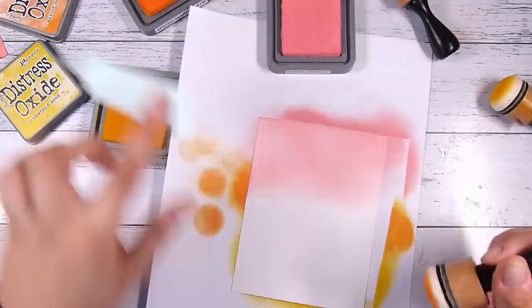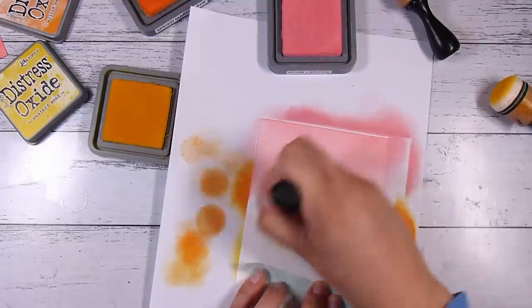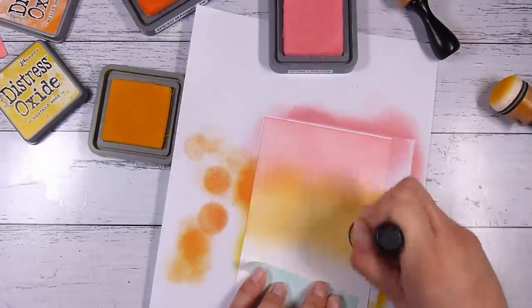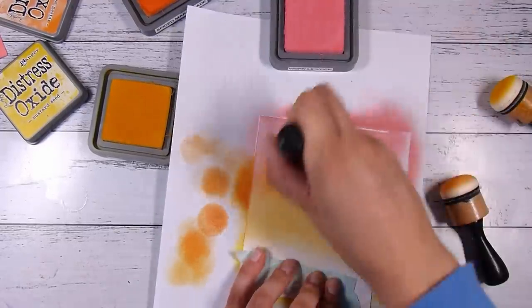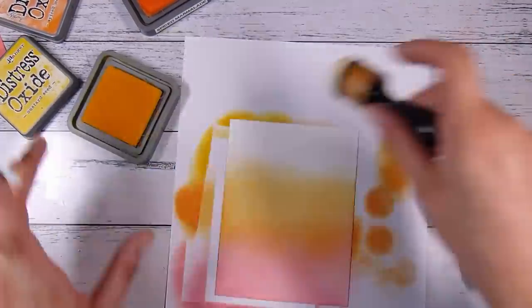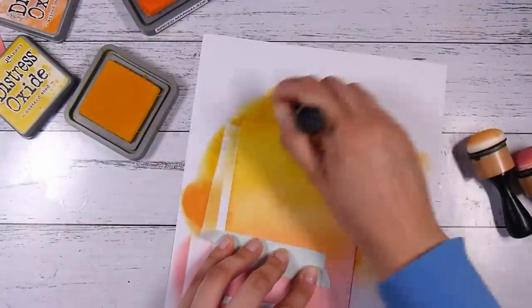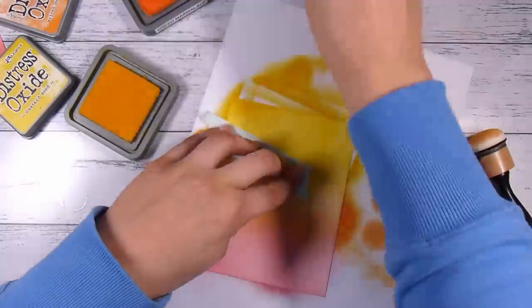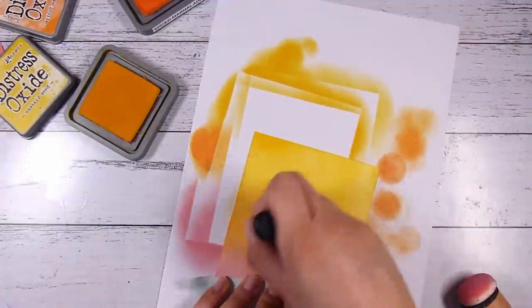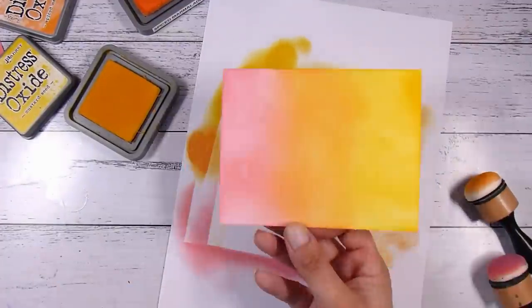This one here I decided to go much, much lighter. Now if you want to cheat the blending process, there are a few things you could do. I would suggest starting off by using the Tim Holtz watercolor paper, which has one smooth side and one textured side.